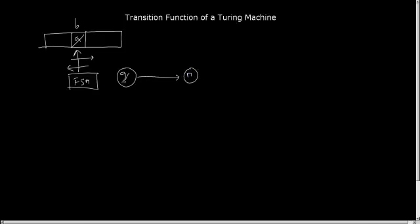So the way we represent in the transition diagram is like from Q to R, it reads A slash, it writes B, and suppose it moves to right R. This way we represent the transition in a Turing machine.